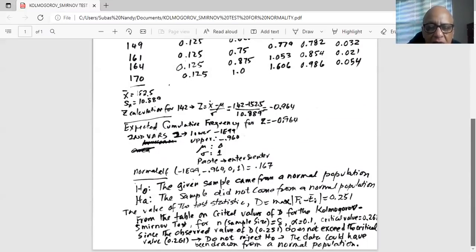Then I look up on the table on critical values of D for the Kolmogorov-Smirnov test. My sample size n is 8. My alpha is 0.1. My critical value from the table is 0.261. Since the observed value of the test statistic 0.251 does not exceed the critical value, which is 0.261, decision: do not reject H0.